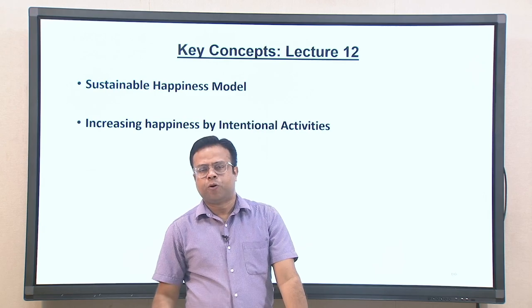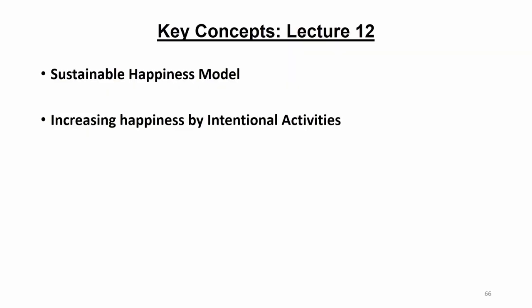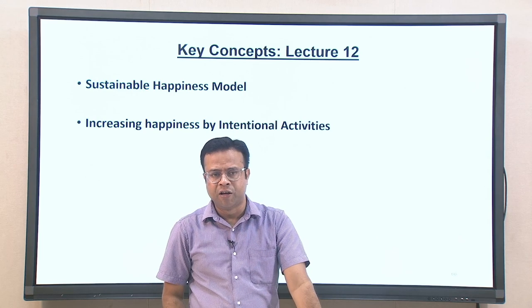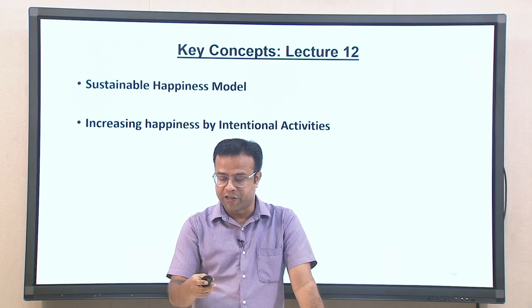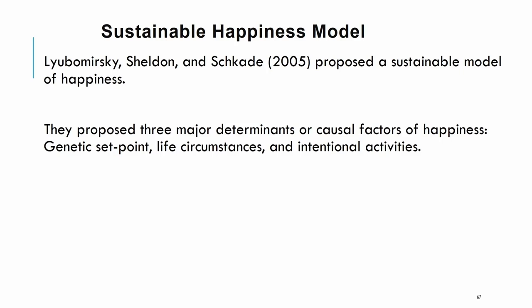Today we will talk about how it is possible to enhance happiness and what factors contribute to happiness in our life, through a model called the Sustainable Happiness Model. This model was proposed by Lyubomirsky and Sheldon in 2005, and it identifies three major determinants of happiness: first, genetic set point; second, life circumstances; and third, intentional activities.